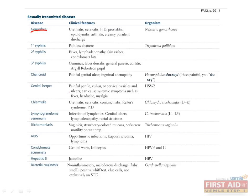Syphilis is caused by Treponema pallidum and progresses through three stages. Primary syphilis is characterized by a painless chancre, while secondary syphilis often presents with fever, lymphadenopathy, skin rashes, and condylomata. Tertiary syphilis is a later stage of the disease and can present with gummas, tabes dorsalis, general paresis, aortitis, and Argyll Robertson pupil.